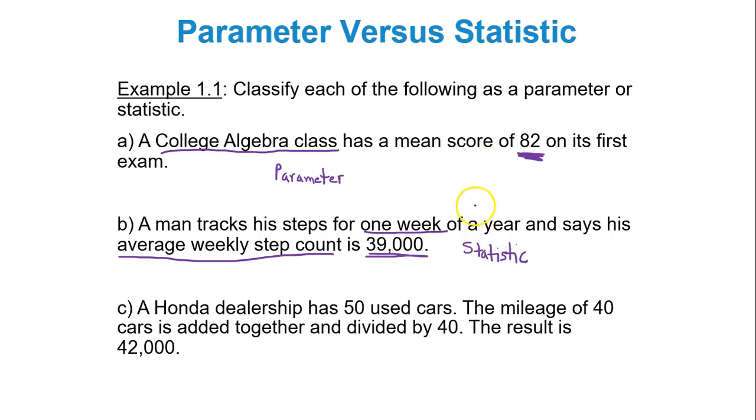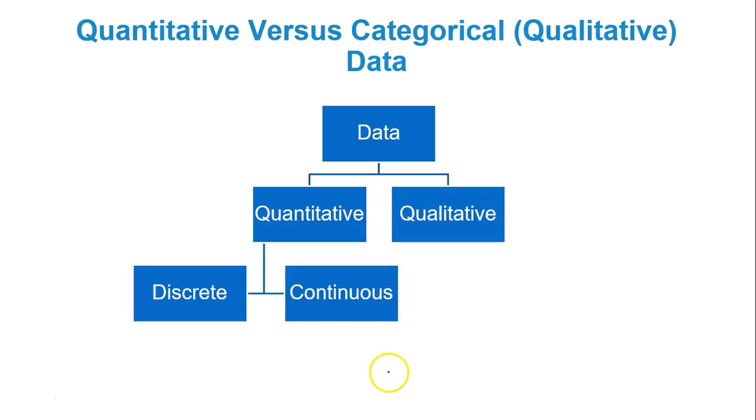Now part C, a Honda dealership has 50 used cars. The mileage of 40 cars is added together and divided by 40. The result is 42,000. So here I have my Honda dealership with 50 used cars and the result is 42,000, the average mileage. Well, did I use all 50 cars to find that calculation? No. I used 40 cars. So as a result, this is a statistic. I used a sample. I used a piece of the population. Only 40 out of 50 cars were used. So that's parameter versus statistic.